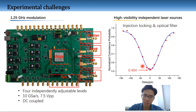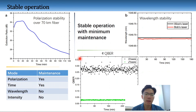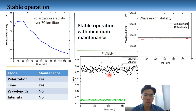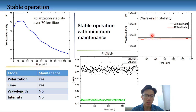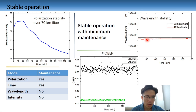MDI QKD requires two independent sources to maintain good interference throughout the experiments. For this purpose, we characterized the stability of the polarization, the wavelengths, and the timing of our system to determine the period of manual calibration and maintenance. The polarization extinction ratio is maintained above 27 dB over a 70 km fiber spool. The wavelength is stabilized by accurate temperature tuning. We recalibrate the polarization and timing mode of the system every two hours. The QBER is shown on the bottom, which can also prove the overall stability of the system.